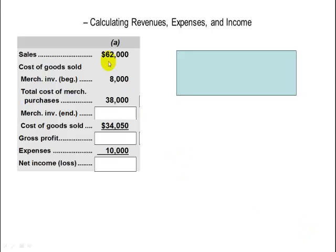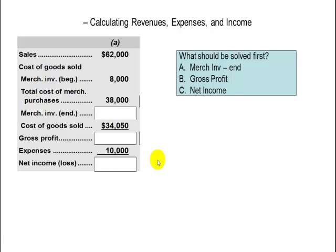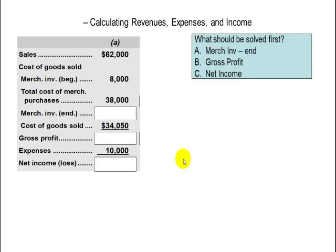Here's another one of these fill-in-the-blank problems where you've got some information given to you and you're trying to find the unknown items. And I would ask you the question: what should be solved first? Should we try to solve for ending merchandise inventory, gross profit, or net income? One of these is really much easier and should be started with first, and that one would be gross profit.